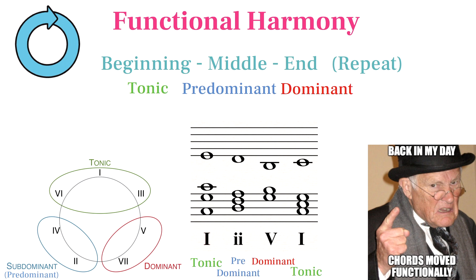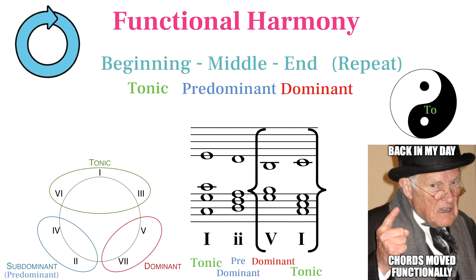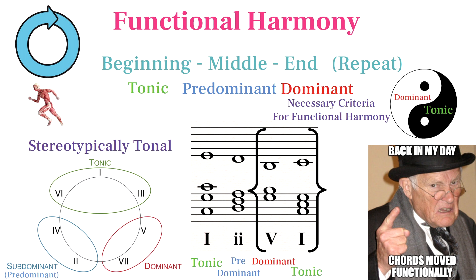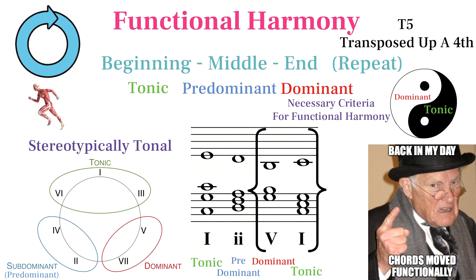The most important relationship is the tonic-dominant relationship, which is like a yin and yang relationship that creates the feeling of a key center. A piece of music is more stereotypically tonal if it relies on all the traditional functions for each chord, but really the only necessary thing for a piece to fit this criteria is having a 5 to 1 tonic-dominant relationship. This criteria essentially has to do with the way chords move, with the common 5 to 1 movement being a transposition up a fourth.